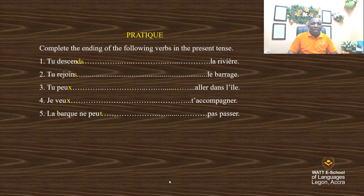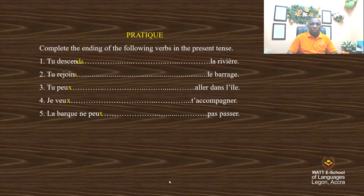You understand that the irregular verbs — that is the verbs of the third group — have no pattern when conjugating them in the present tense. So you must know them before you do the conjugation. As for the verbs of the first and second group, they follow the same pattern. That's why we say they are regular verbs, while those of the third group are irregular verbs.